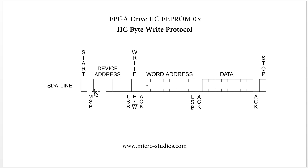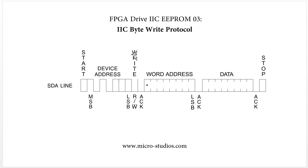It will write the 7-bit device address — seven bits. After this, it will have one write or read bit here. For the write protocol, this is low level. Low level means this is write protocol.